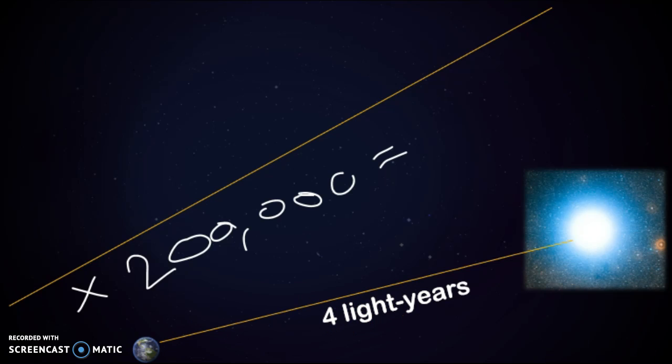And one light year is equal to the distance light can travel in one year. Light's pretty fast, so it can travel a lot in just one year. So theoretically it'll take us four years to get to the nearest star if we were going at the speed of light, which we aren't any close to doing that any time soon.